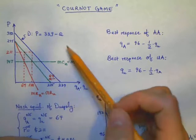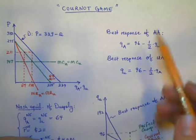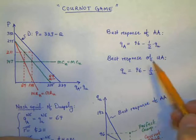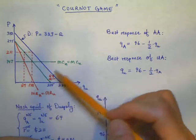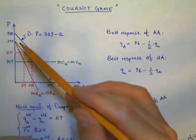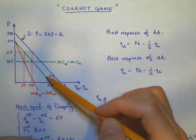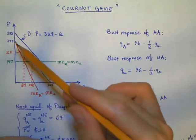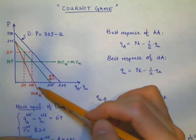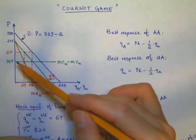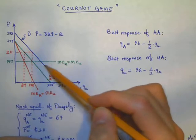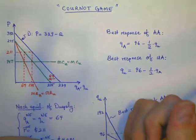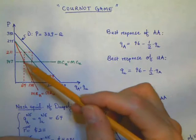Given this demand, we were able to find the best response for American Airlines and United Airlines given by these equations. It's not difficult to see where this comes from. We have the residual demand of American Airlines, and given this residual demand, the residual marginal revenue for American Airlines is this curve here. It's possible to find the intersection between the marginal cost and the residual marginal revenue of American Airlines.